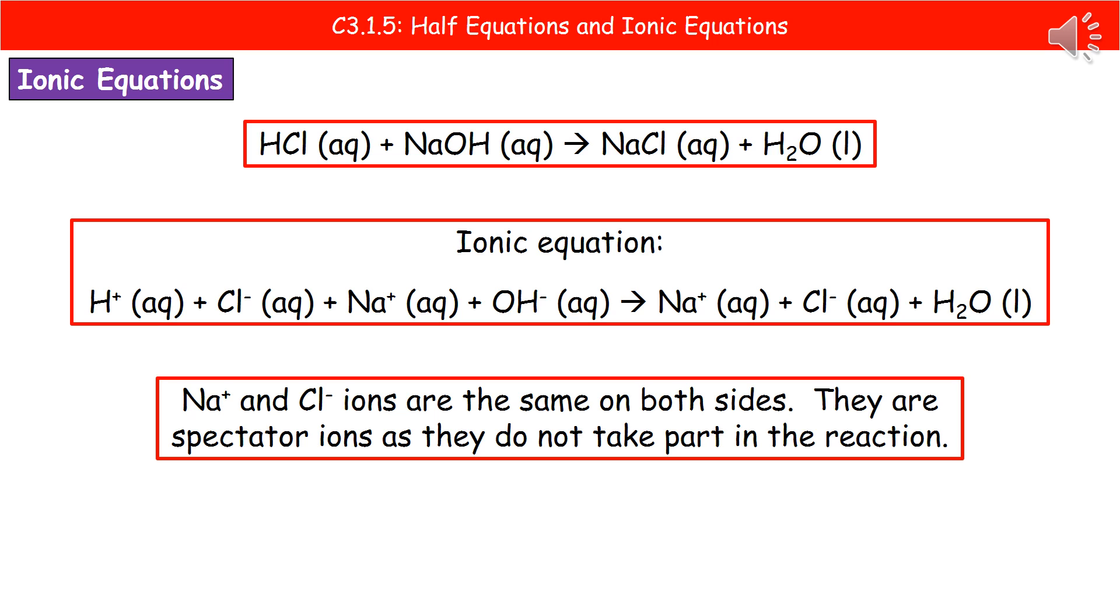Now, when we actually look at that complete ionic equation, hopefully what you've noticed is that our sodium and our chloride ions are the same on the left and the right of the arrow. So because they haven't changed between our reactants and our products, then we refer to them as spectator ions.